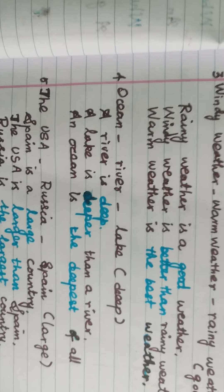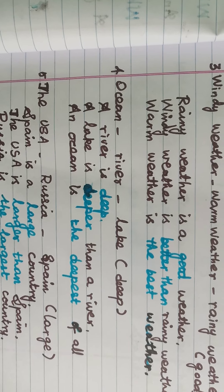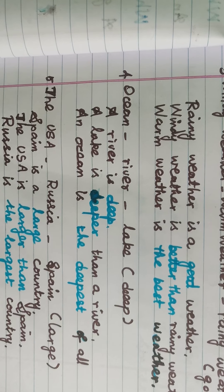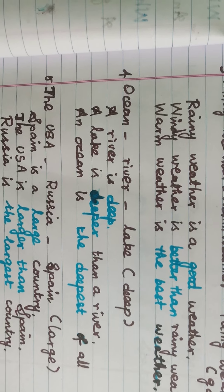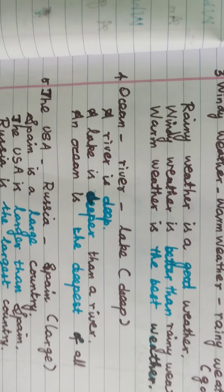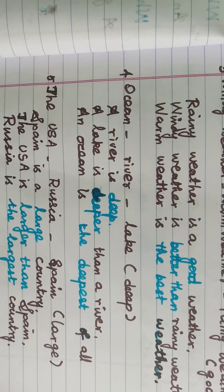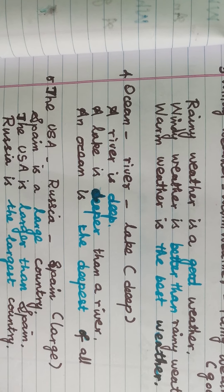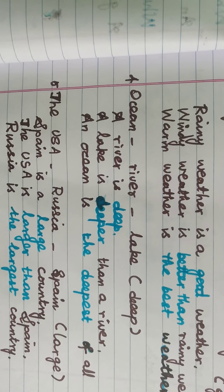The USA, Russia, Spain. The bracket word is 'large.' Spain is a large country — positive degree. The USA is larger than Spain — comparative degree. Russia is the largest country — superlative degree.